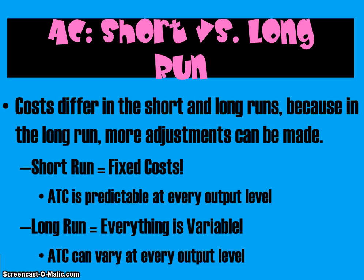In the long run, your average total cost at any given output level is going to vary depending on what short-run decisions you are making for your company. The long-run average total cost curve is going to include the best case scenarios, or the lowest possible short-run average total cost at any given output level. I'll explain that more when I show some graphs in a minute.